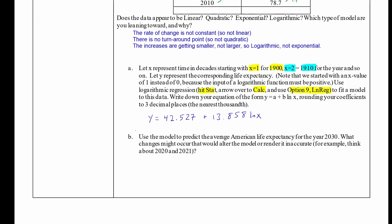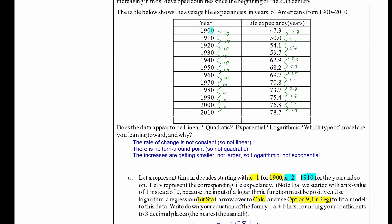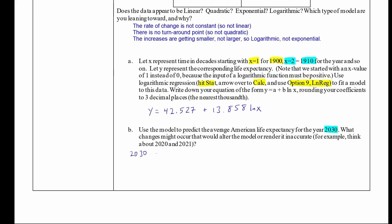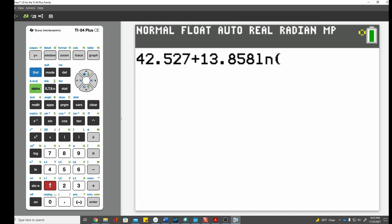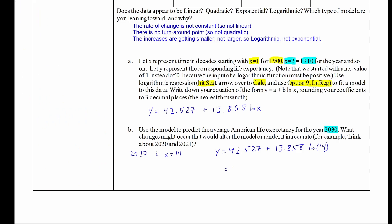Now let's use the model to predict the average American life expectancy for the year 2030. The first thing I need to do in order to answer this question is to figure out what x value is 2030. Remember that 1900 was an x value of 1. 2010 was an x value of 12. So 2020 would be an x value of 13, and 2030 would be an x value of 14. So in my model, y equals 42.527 plus 13.858 times the natural log of 14. And when we type that in on our calculator, it will give us 79.099. Rounding to one decimal place, we'll get 79.1 years.